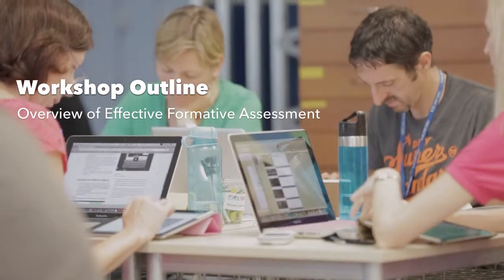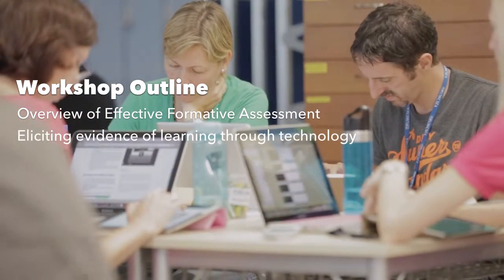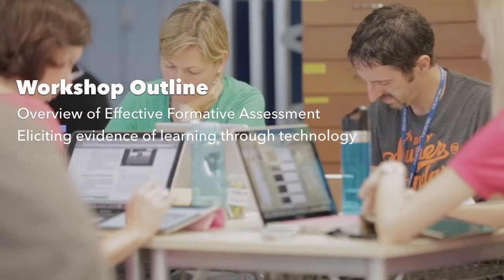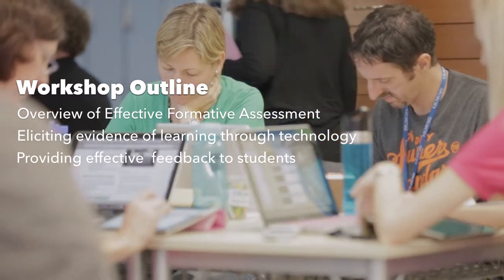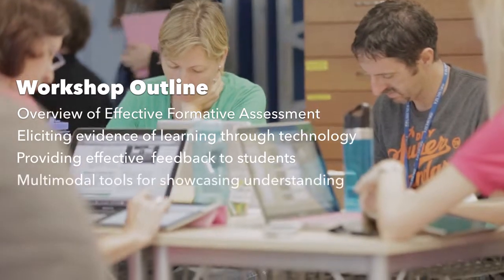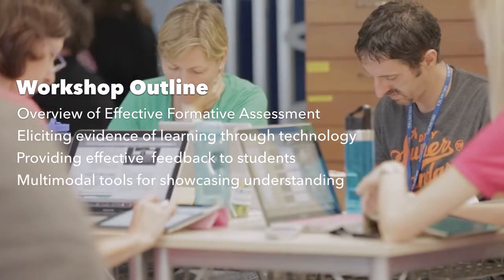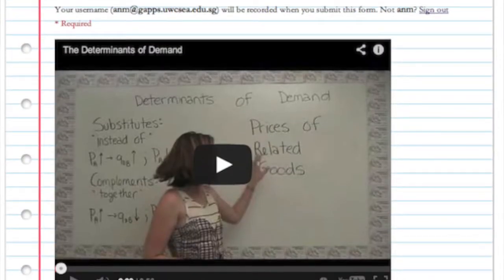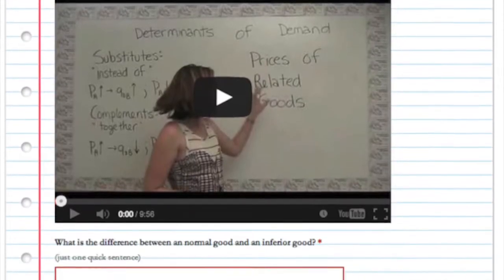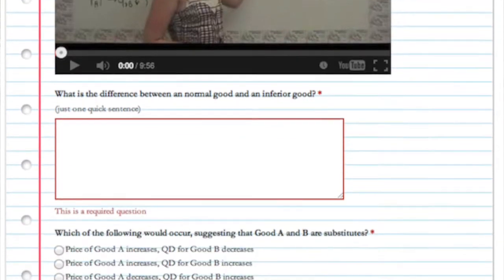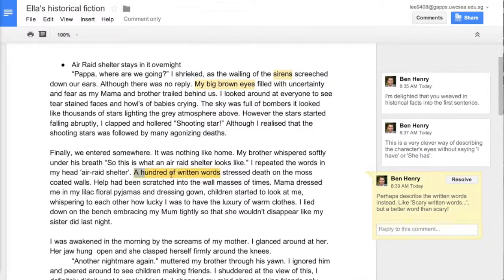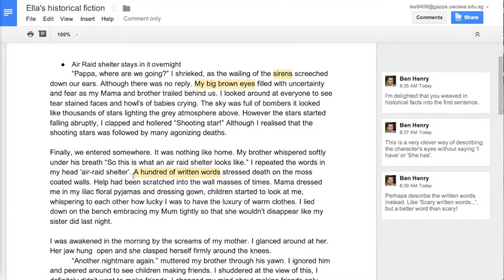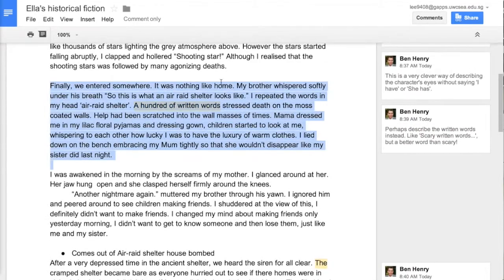Beginning with an overview of what we see as effective formative assessment and a model developed by Paul Black and Dylan Williams, this workshop will dive into different ways that technology can help elicit evidence of student understanding through tools such as Google Forms and Socrative, then look deeper at ways that teachers can provide really authentic feedback to students, and ways that we can leverage peers to do the same things.